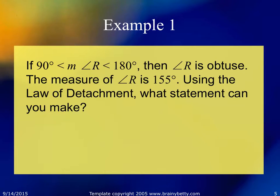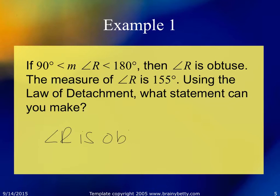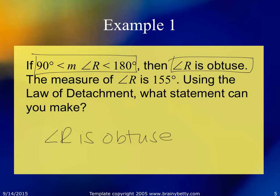If the measure of angle R falls between 90 degrees and 180 degrees, then angle R is obtuse. And you're given that the measure of angle R is 155 degrees. Using the law of detachment, what statement can be made? That angle R is obtuse. The if part was: if an angle falls between 90 and 180 degrees. The conclusion is: angle R is obtuse. Since 155 is between 90 and 180, you're led to believe that angle R is obtuse. That's the law of detachment.